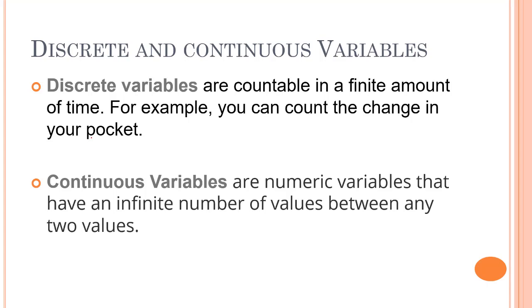Apart from that, we have two other variables: discrete variables and continuous variables. Discrete variables are countable in a finite amount of time. Continuous variables are numeric variables that have an infinite number of values that lie between any two numbers. Let's take an example of a class of students. We can say that there are 50 girls.